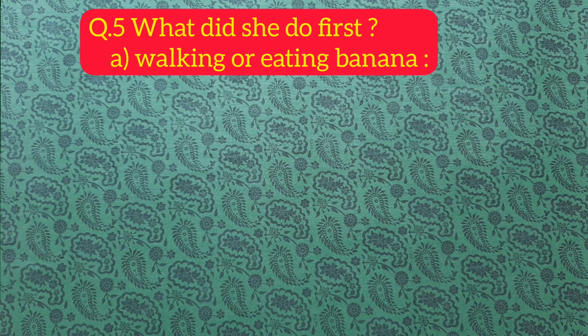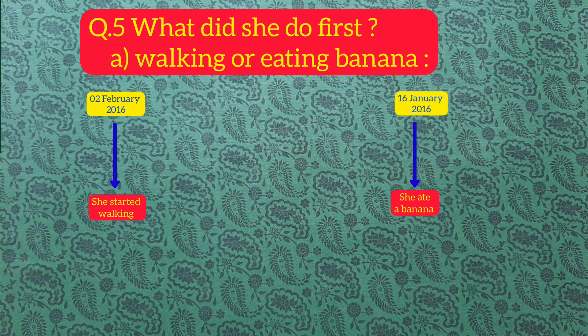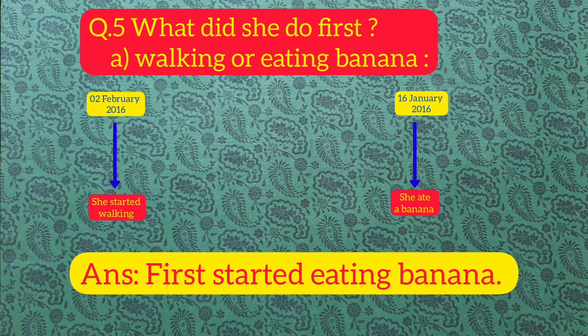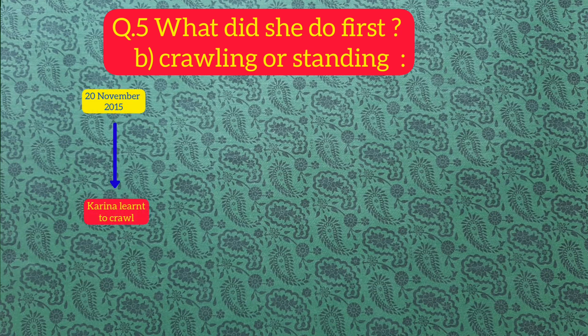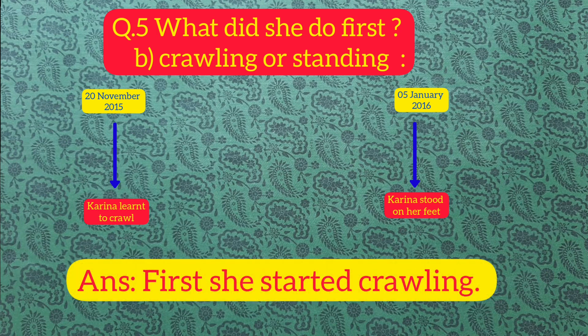Next question number five: what did she do first? Part A: walking or eating banana? According to the diary, she started walking in February 2016, but she ate a banana in the month of January 2016. So first she started eating banana. Next part B: did she first start crawling or standing? According to the diary, she started crawling on 20th November 2015, and on 5th January 2016 she first stood on her feet. So it's clear that first she started crawling.